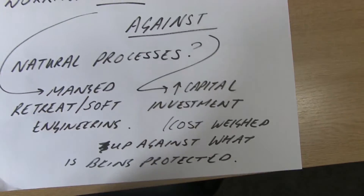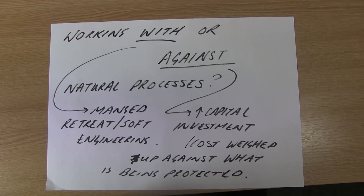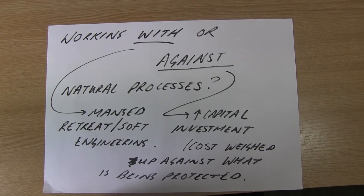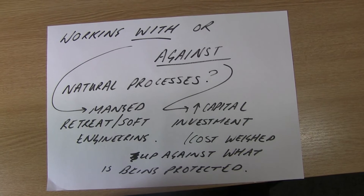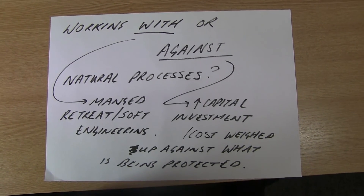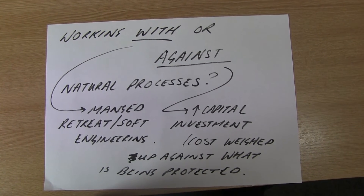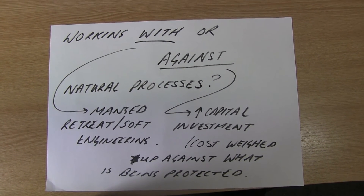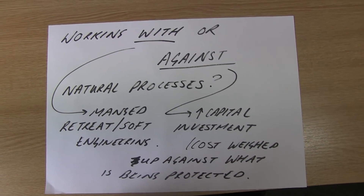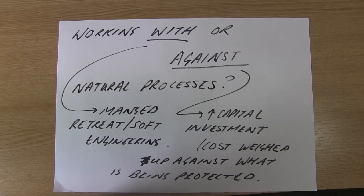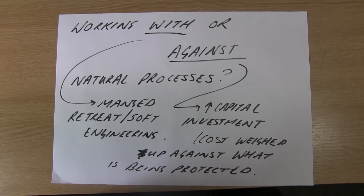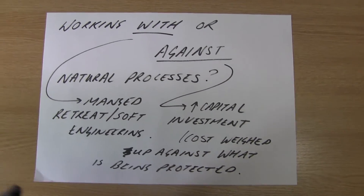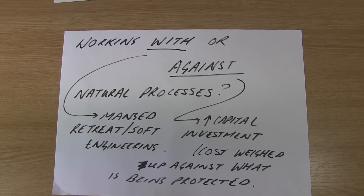There are broadly three strategies to consider. Some work with natural processes — things like managed retreat and soft engineering. Those that work against natural processes — your hard engineering strategies — require a bigger capital investment, meaning lots of money. You weigh up the costs of building, say, a seawall against the costs of losing what is protected behind it, whether that's a building, a town centre, or whatever. Make sure you've got notes on all of these and remember in the exam you must explain how each engineering type works.